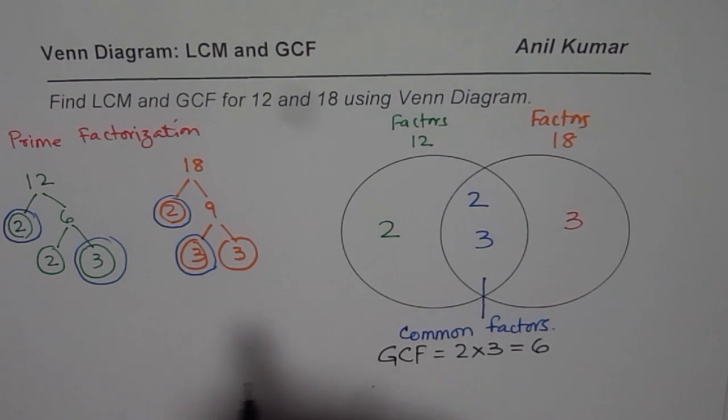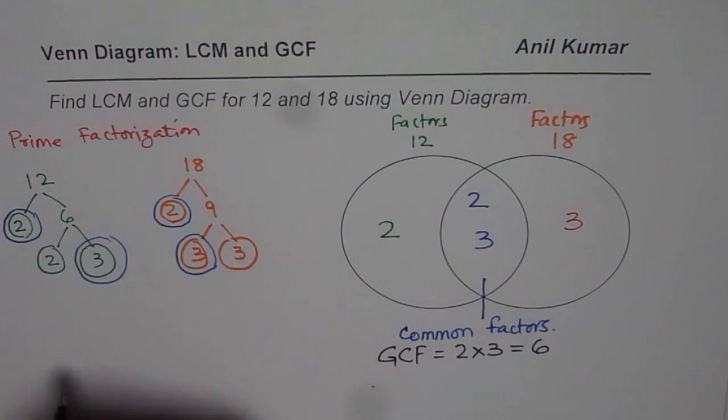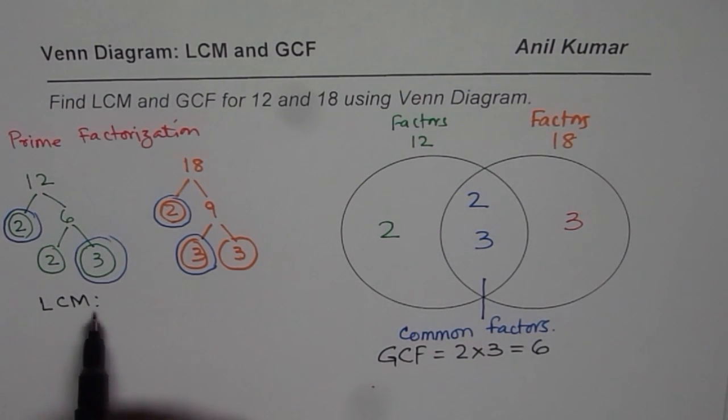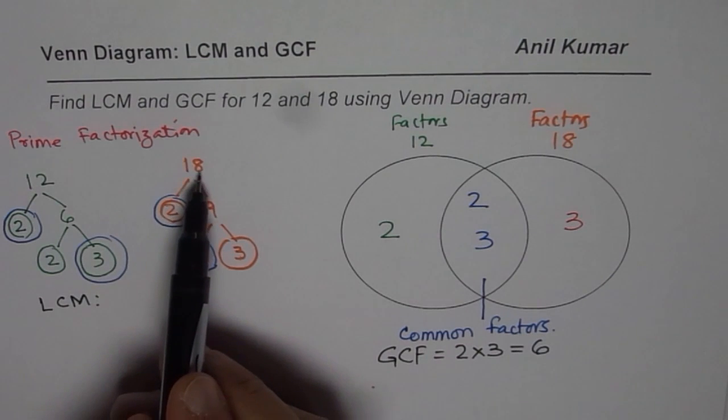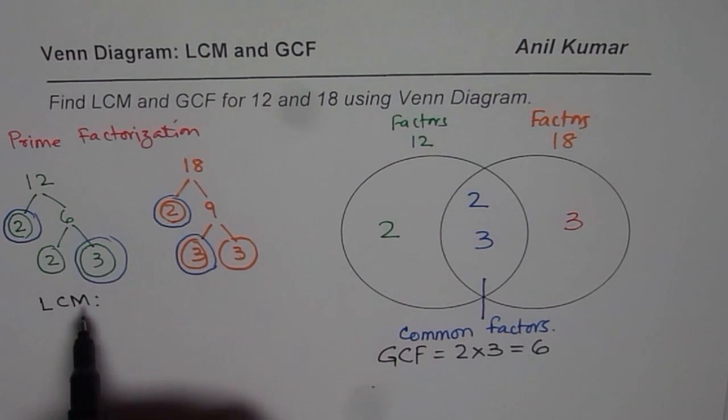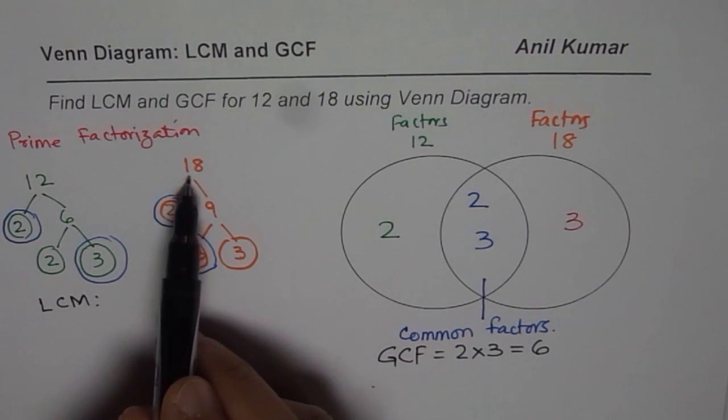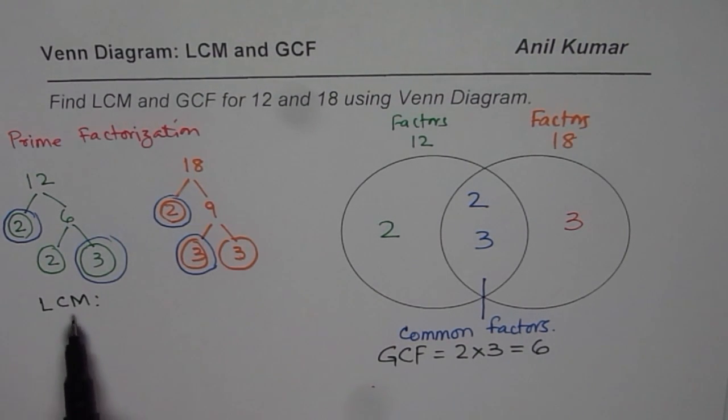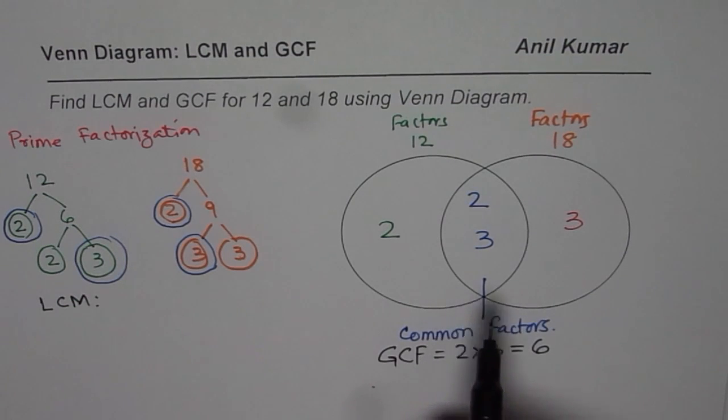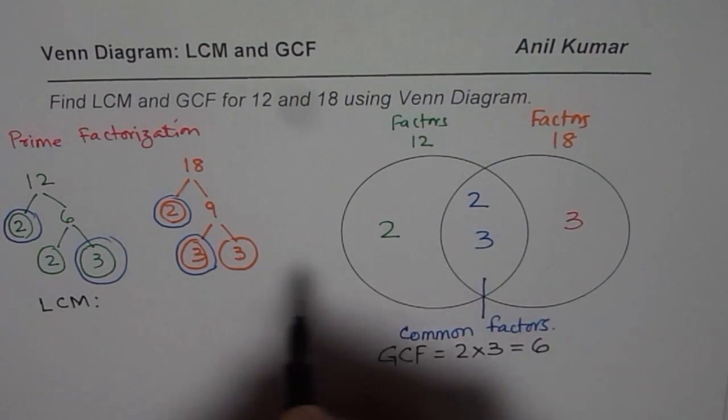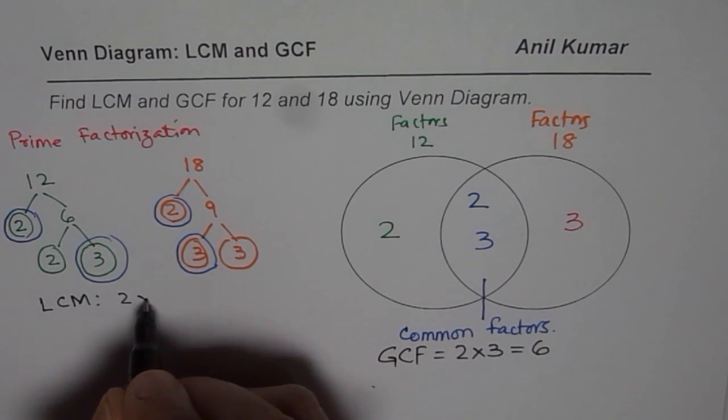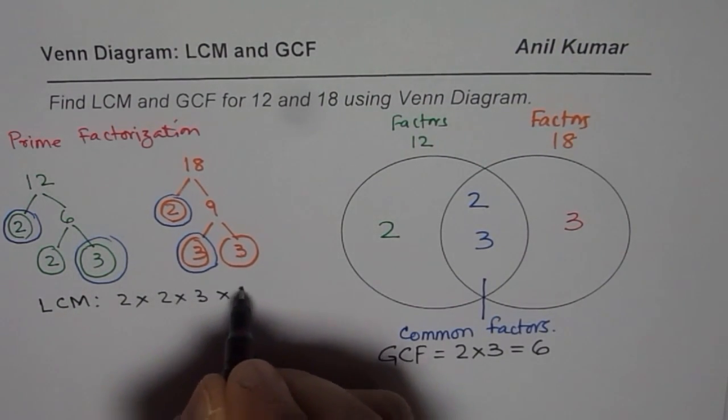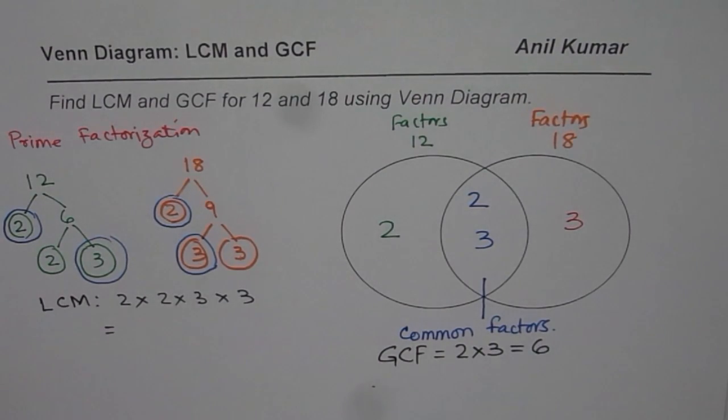Now let's talk about the lowest common multiple. So let's see what should be LCM. Now remember lowest common multiple, multiples are more than the numbers. At least it should be minimum of the higher number, at least it could be 18, but it has to be more than 18. How do you get LCM from here? For getting LCM just multiply all these numbers. So we have 2 times 2 times 3 and 3.